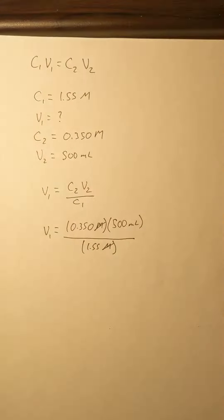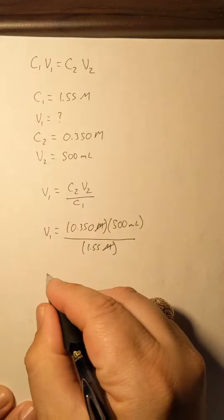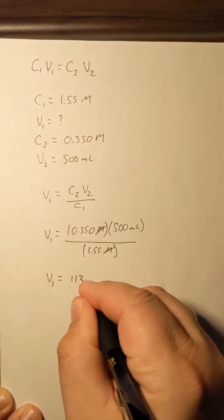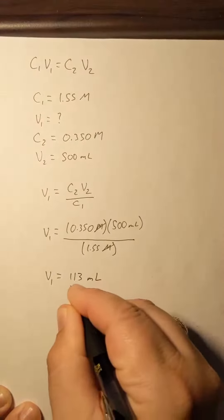And so now we'll just go to the calculator and plug everybody in. 0.35 times 500 all over 1.55. And my starting volume, the amount of the original solution I need to measure out, is 113 milliliters.